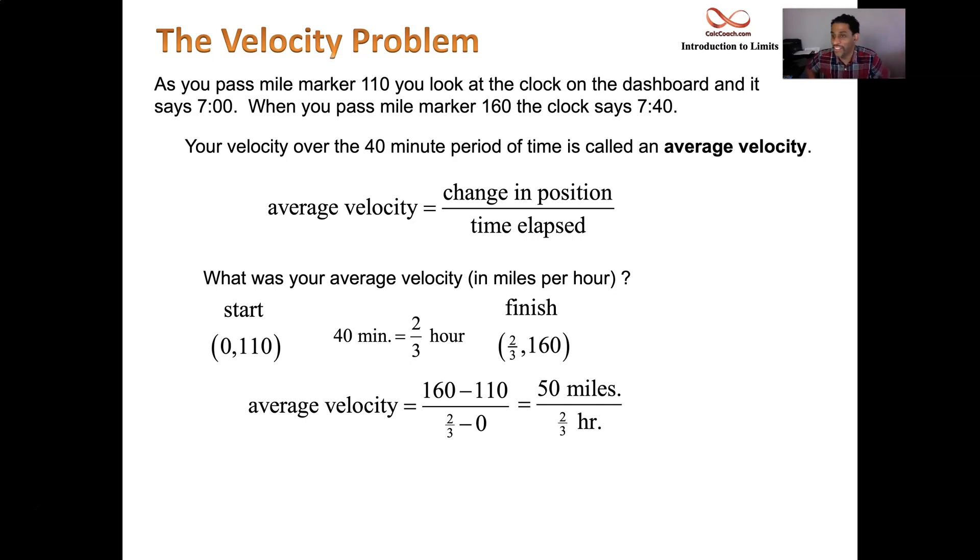So 50 over two thirds ends up being 75 miles per hour. That's what you averaged over that 40 minute time window. Maybe the driver was on cruise control, and maybe it was actually stuck at 75 miles per hour the whole time. Unlikely. Probably had to brake, probably had to change lanes. Maybe sped up past that, maybe went lower than that. But on average, over that time interval, you went 75 miles per hour.